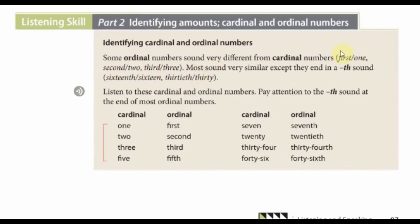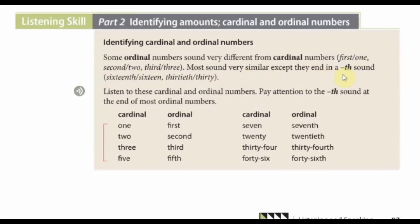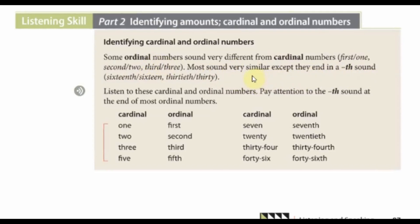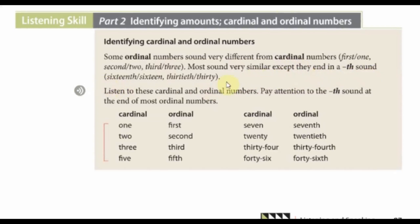Apart from these three — first, second, and third — most ordinal numbers sound very similar to cardinal numbers except that they end in a 'th' sound. We have these examples here: the first one, sixteenth and sixteen, thirtieth and thirty.